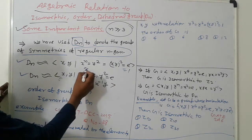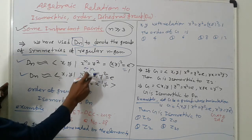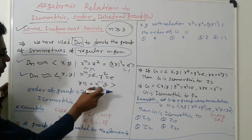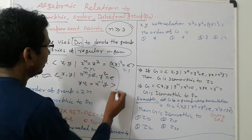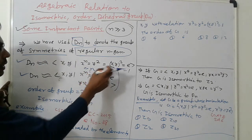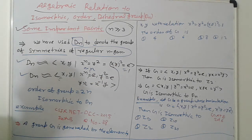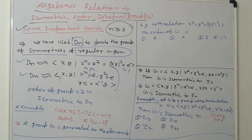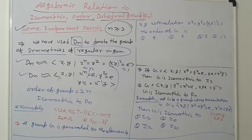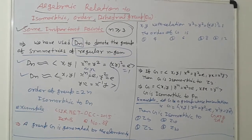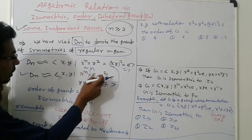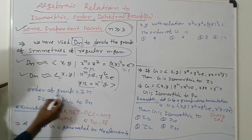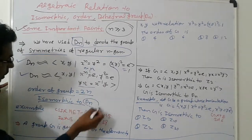Otherwise the same format can be written as: Dn = ⟨x, y | x^n = y^2 = e and yx = x^(-1)y⟩. So the order of the group is 2n and it is isomorphic to Dn. This is the dihedral group definition.